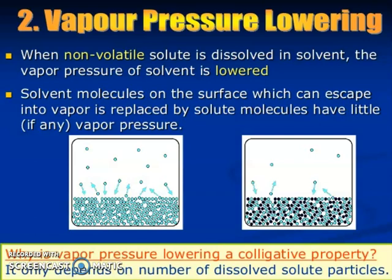When non-volatile solute is dissolved in solvent, the Vapor Pressure of solvent is lowered. Solvent molecules on the surface which can escape into Vapor is replaced by solute molecules that have little if any Vapor Pressure.